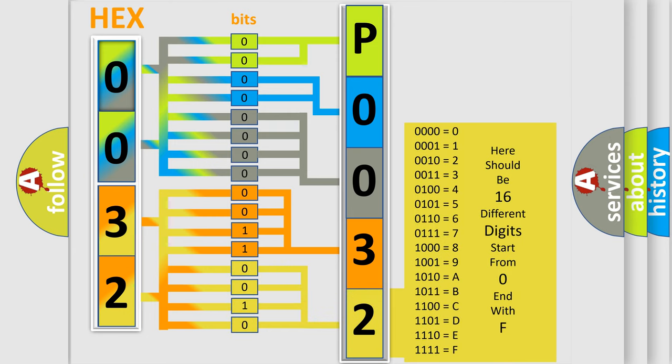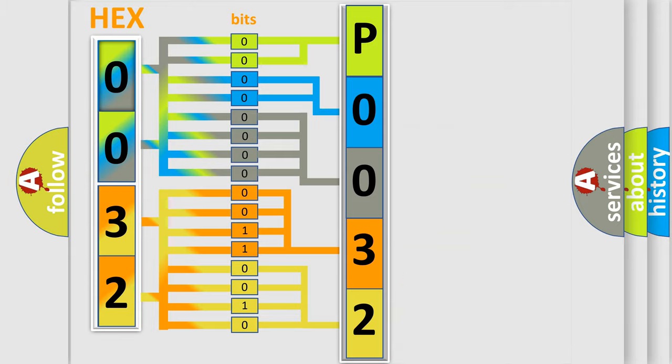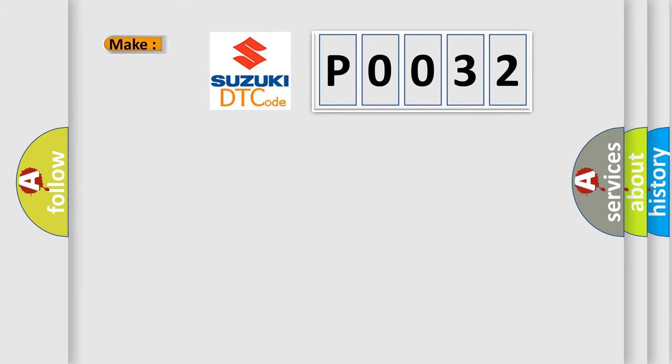We now know in what way the diagnostic tool translates the received information into a more comprehensible format. The number itself does not make sense to us if we cannot assign information about what it actually expresses. So, what does the Diagnostic Trouble Code P0032 interpret specifically for Suzuki car manufacturers?